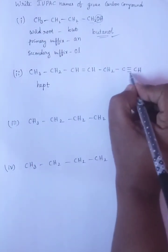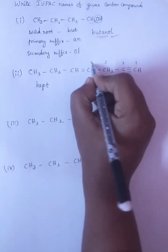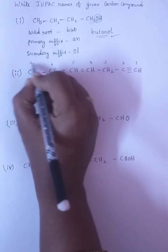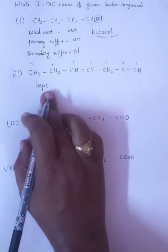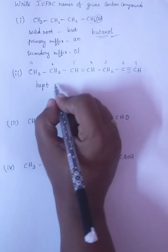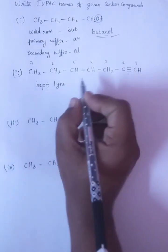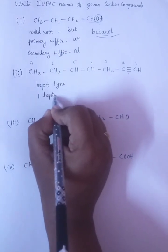And we have to give preference from the triple bond: 1, 2, 3, 4, 5, 6, 7. Seven carbons is there so that's why HEPT. And triple bond at first, so that's why we have to write 1-IN. Or we can write it as 1-HEPT. And there is a double bond at 4.